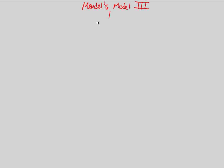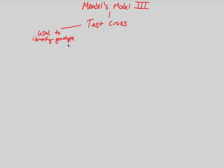In this next cross, we're going to be looking at something Mendel did known as a test cross. A test cross is a very useful — incredibly useful — genetic tool that helps us look at and understand the genotypes of unknown individuals. What we can state about a test cross, simply, is that it is used to identify genotype — more specifically, used to identify the genotype of a dominant phenotype.